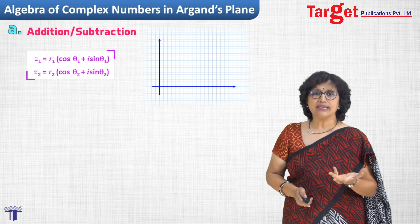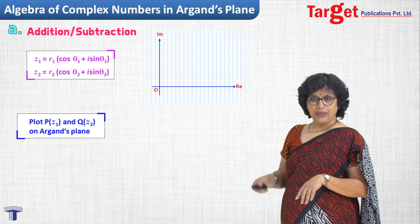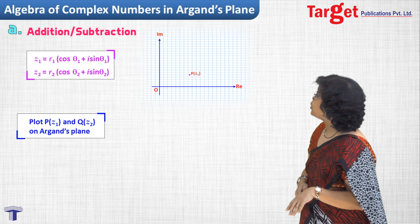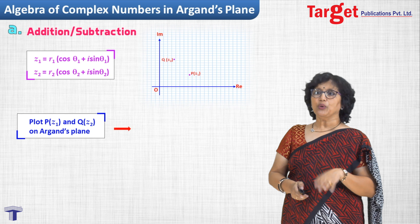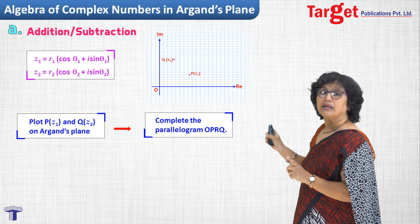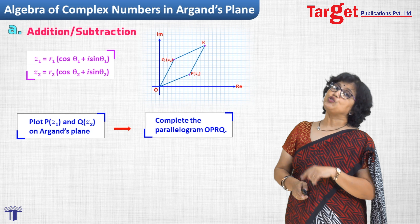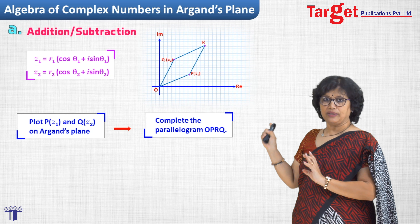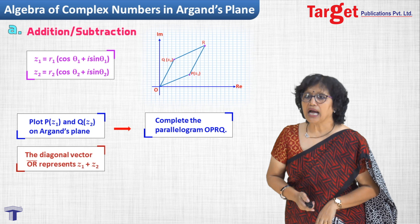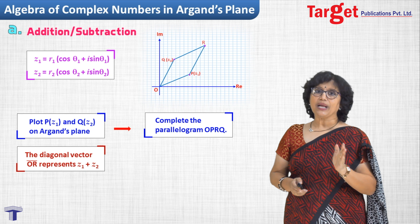Since we are on the Argand plane, I draw the real axis, imaginary axis, and origin, and mark positions where z1 and z2 lie. I plot point P representing z1 and point Q representing z2. Then we complete the parallelogram OPRQ — join OP, go up to point R, join R to Q and Q to O. The position of R is important: vector OR represents z1 plus z2.